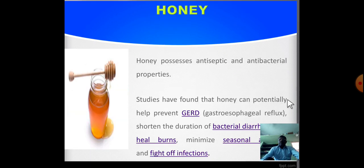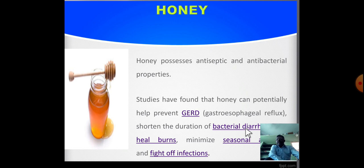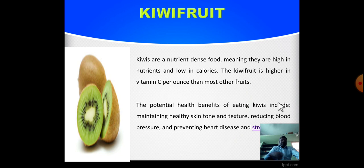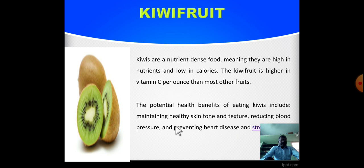Then kiwi. Kiwi possesses antiseptic and antibacterial properties. Studies have found that kiwi can potentially help prevent gastroesophageal reflux disease. Kiwi fruits are high in nutrients and low in calories. Kiwi is higher in Vitamin C per ounce than most other fruits. The potential health benefits of eating kiwi include maintaining healthy skin, reducing blood pressure, and preventing heart disease and stroke.